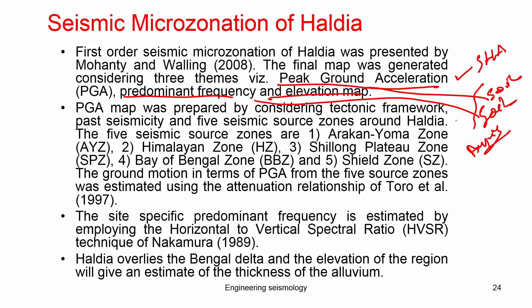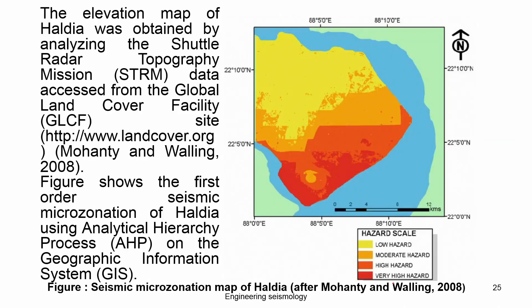The PGA was prepared considering the tectonic framework, past seismicity, and five seismic source zones around Kolkata. Site-specific predominant frequency was estimated using the horizontal-to-vertical spectral ratio (HVSR) technique. Kolkata overlies the Bengal delta, and the elevation of the region gives an estimate of alluvial thickness. The elevation map was obtained by analyzing the Shuttle Radar Topography Mission data accessed from the Global Land Cover Facilities.